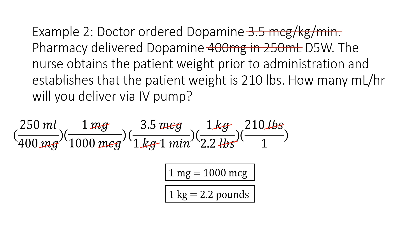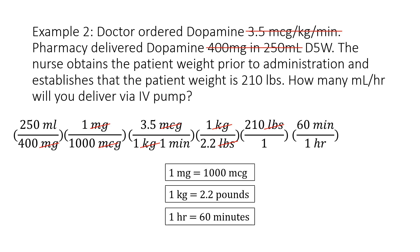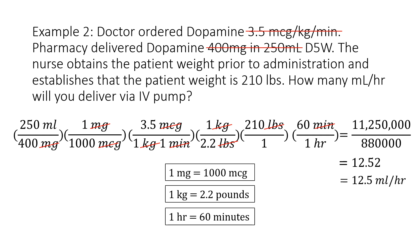The last step is that I want the dosage per hour, not minute. You need to know another conversion: 1 hour is 60 minutes. Since I had 1 minute on the bottom during my third step, it will go on top to cancel, so 60 minutes will go on top and 1 hour will go on the bottom. Everything cancels — all the units cancel that I want to, and I am left with milliliters per hour. Now I'm ready to do the multiplication. I multiply the numbers on top and I get 11,250,000, then I multiply the numbers on the bottom and I get 880,000. Then I divide to get 12.52, but I want it rounded to the tenths place since I'm doing a milliliter calculation, and this rounds to 12.5 milliliters per hour.